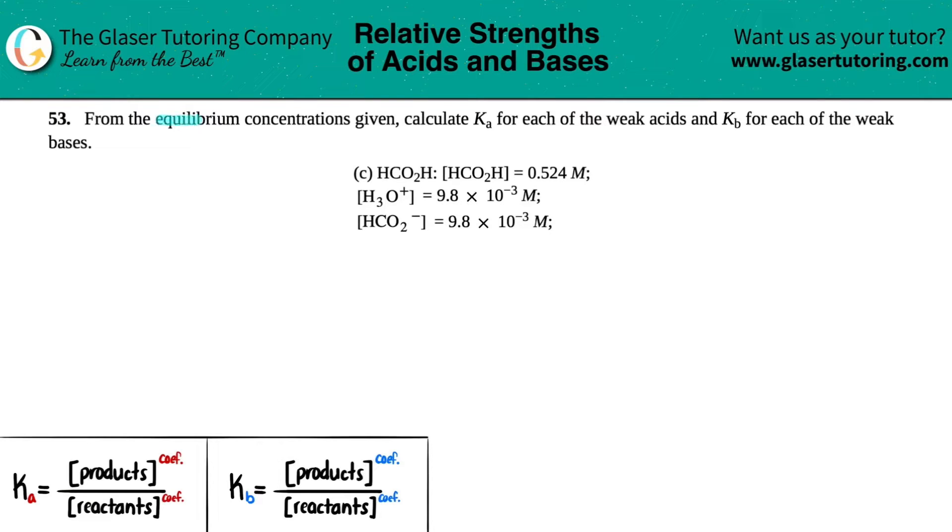Number 53. From the equilibrium concentrations given, calculate Ka for each of the weak acids and Kb for each of the weak bases. Then we have letter C. So in this case, they give us a compound HCO2H. They tell us what that concentration is, 0.524 molarity. They told us we have an H3O+ concentration of 9.8 times 10 to the negative 3, and then an HCO2- concentration of 9.8 times 10 to the negative 3.